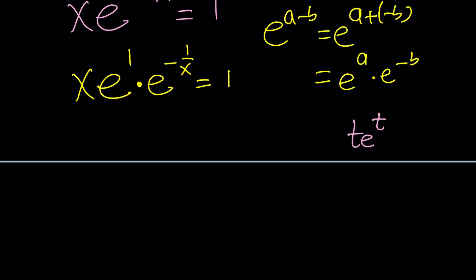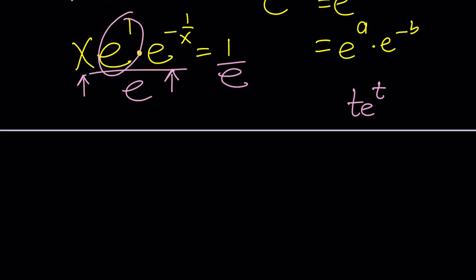Look at this. This is a variable. That's a variable. Hmm. They're not exactly the same thing, but I think I need to get rid of this. So let's divide both sides by e.